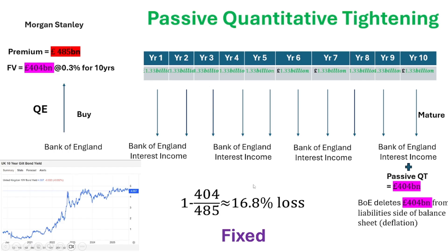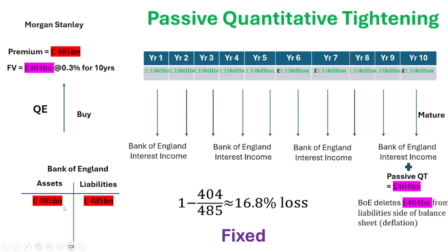Looking at the total loss, what I want you to take away is that this loss is fixed — it doesn't change. Passive quantitative tightening is fixed. When they buy at a premium, the liabilities equal the assets: reserves created at 485 billion and total assets of 485 billion. But at the end when passive QT finishes and the bond matures, they only get 404 billion back — leaving 81 billion reserves still in the system that need to be removed.